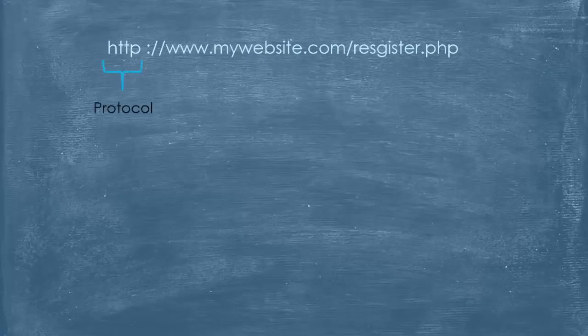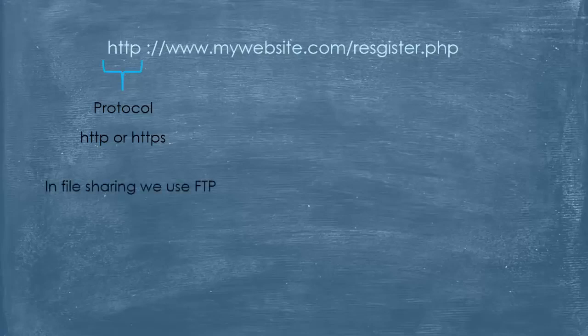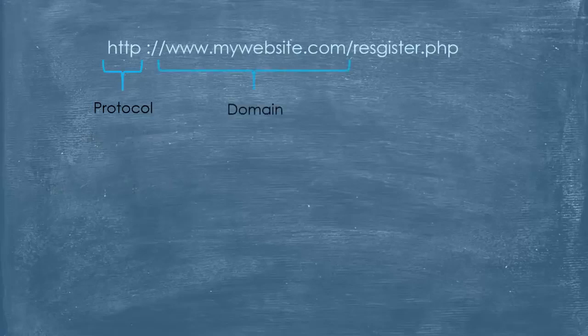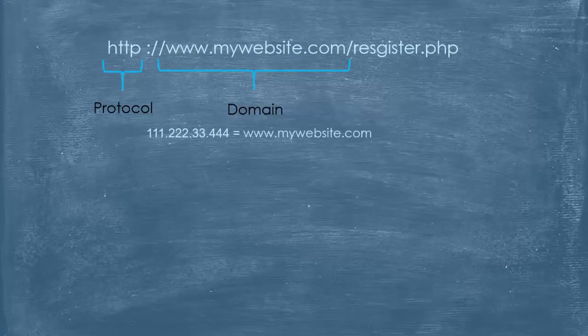Let's bring a URL, dissect it, and explain what each part does. The first part is the protocol we're using, which is of course HTTP or HTTPS. If we're looking for resources on the web, we can use different protocols. For example, if we want to share files on the internet, we use the FTP protocol. The second part is the domain. The domain is the name that the domain name server gives to a unique IP address, so we can use either the name or the IP address. For example, mywebsite.com has the IP address 111.222.33.444. And the domain in the URL is case insensitive.